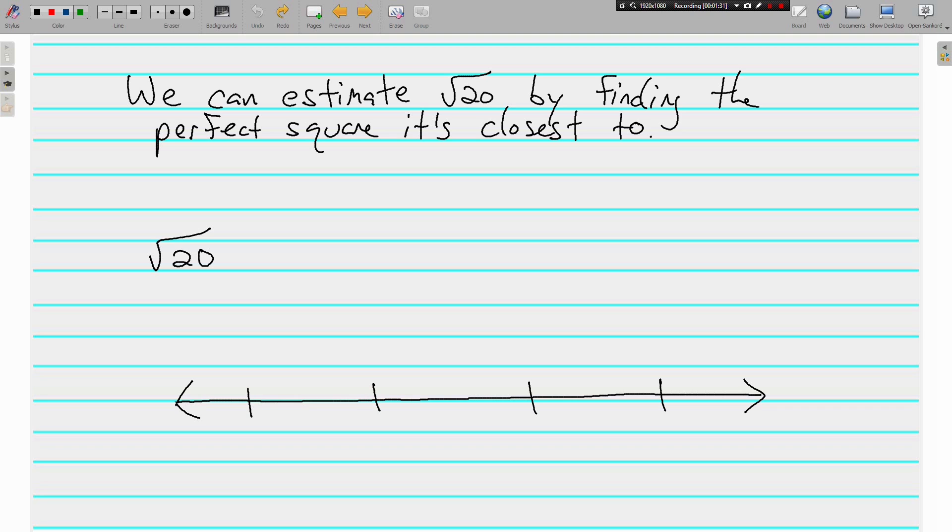So how we're going to do that is we're going to write down the perfect square that's just under 20, which is 16. The square root of 16 is 4. And the perfect square that's above 20 is 25. The square root of 25 is 5.